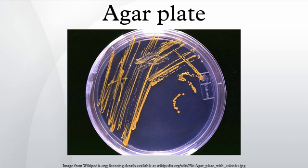Mueller-Hinton agar (MHA) contains beef infusion, peptone, and starch, and is used primarily for antibiotic susceptibility testing. It can be in the form of blood agar. Nutrient agar is usually used for growth of non-fastidious organisms and observation of pigment production. It is safe to use in school science laboratories because it does not selectively grow pathogenic bacteria.